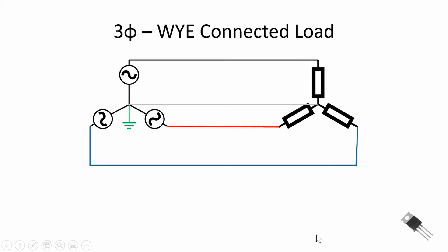Let's quickly review three-phase power. Here I show a Y-connected load. We have our A phase, red is our B phase, and blue is our C phase. In a three-phase system we have a line-to-neutral voltage, which goes from the A node to our neutral conductor. For the color code shown here, this is 120/208, so our line-to-neutral voltage is 120 volts RMS, shown at an angle of zero degrees in phasors.